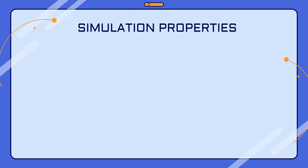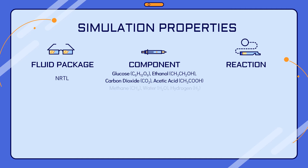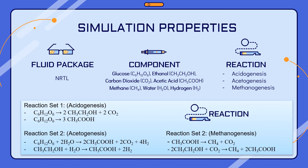Before starting the simulation, we need to select the fluid package, component list, and reactions. For the simulation we chose NRTL as the fluid package. The components included are glucose, ethanol, carbon dioxide, acetic acid, methane, water, and hydrogen. There are three reaction types in anaerobic digestion: acidogenesis, acetogenesis, and methanogenesis. Reaction set one, consisting of two acidogenesis reactions, occurs in the first CSTR (R1), while reaction set two, consisting of four acetogenesis and methanogenesis reactions, occurs in the second CSTR (R2).